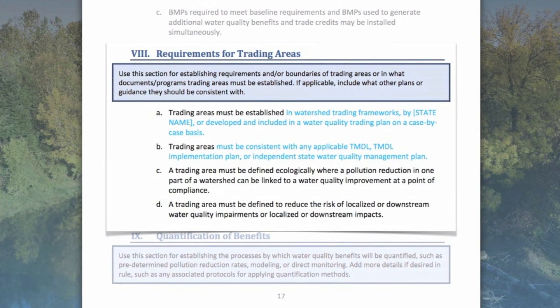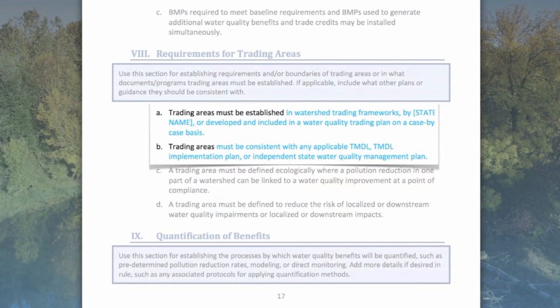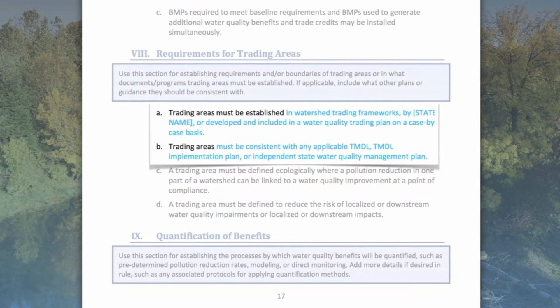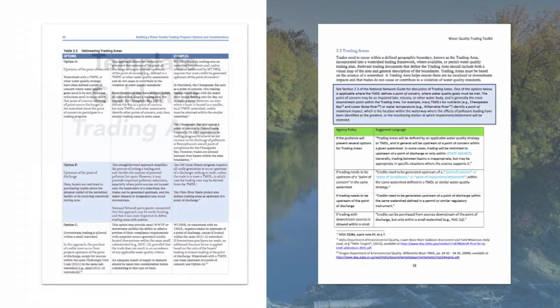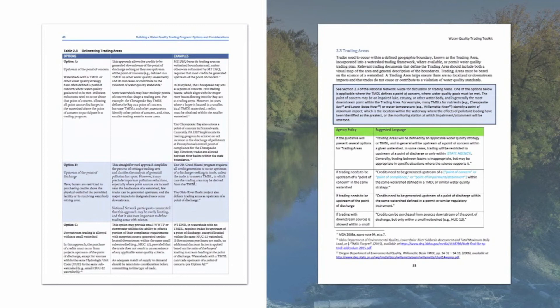The template suggests four requirements to be placed in a rule regarding trading areas. The first two are shown in blue, meaning they are likely to be modified or the state should make sure they are consistent with internal policies and procedures. The latter two requirements are unlikely to change because they relate to requirements for trading areas set by EPA and consensus among participants in the National Network for Water Quality Trading. The template guideline gets a little more specific, providing a number of options based on those identified in the National Network on Water Quality Trading's Options and Considerations report. You can look to the National Network Guide to talk through the pros, cons, and examples of where each option has been used.